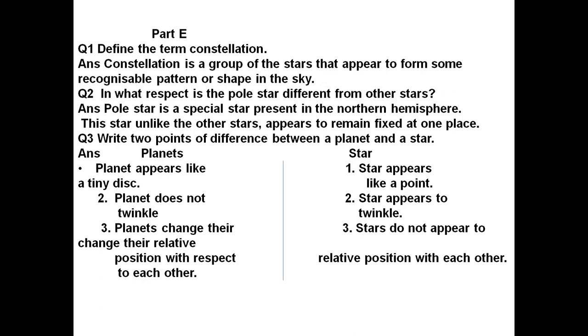Question number 1: Define the term constellation. Constellation is a group of stars that appear to form some recognizable pattern or shape in the sky.